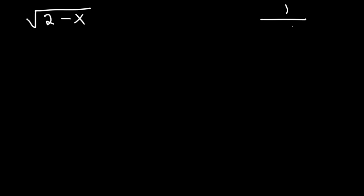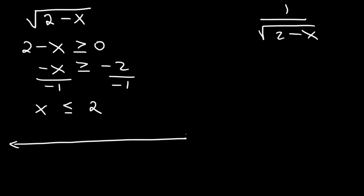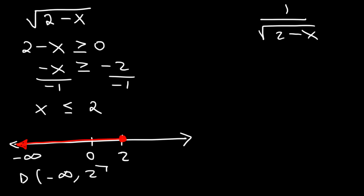Try these two: the square root of 2 minus x, and 1 over the square root of 2 minus x. For the example on the left, we're going to set the inside greater than or equal to 0. If we subtract both sides by 2, negative x is greater than or equal to negative 2. Now if we divide both sides by negative 1, the inequality changes direction. So x is less than or equal to positive 2. Because it's equal to it, we need to use a closed circle, and because it's less than, we shade towards the left. So the domain is going to be from negative infinity to positive 2, including 2.